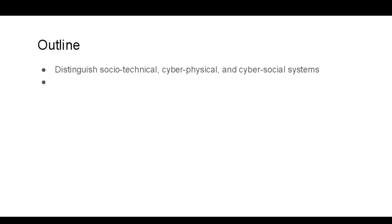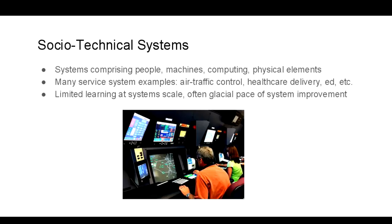Let me start with the first bullet—I want to distinguish socio-technical, cyber physical, and cyber social systems. Socio-technical systems is a topic that's been studied for decades. These are viewed as systems comprising people, machines, computing, physical elements. There's a picture here of an air traffic control system, for example.